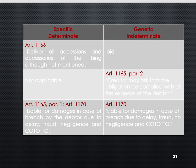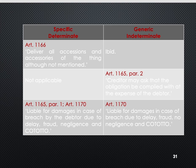The duties of the debtor in an obligation to give a determinate thing are: to preserve or take care of the thing due, deliver the fruits of the thing, deliver its accessories and accessions, deliver the thing itself as to kinds of delivery stated in Articles 1497 to 1501, and answer for damages in case of non-fulfillment or breach. For a generic thing, the debtor must deliver a thing of the quality intended by the parties considering the purpose of the obligation, and be liable for damages in case of fraud, negligence, or delay.